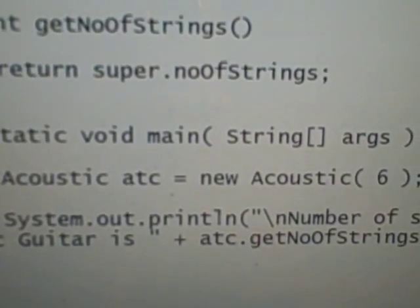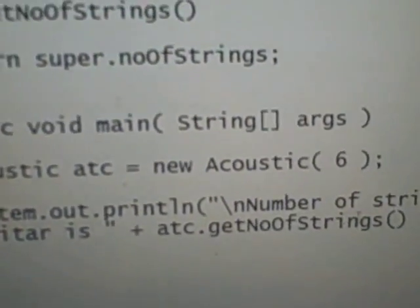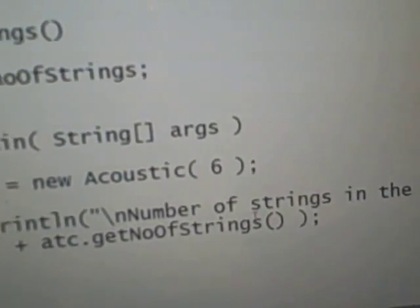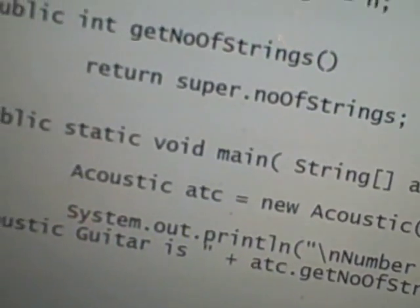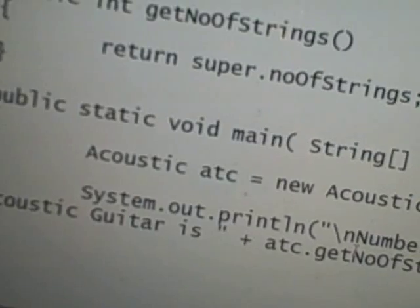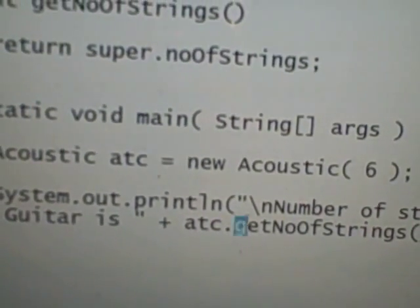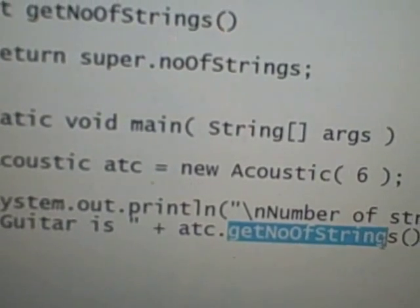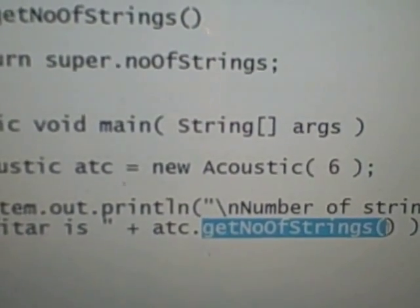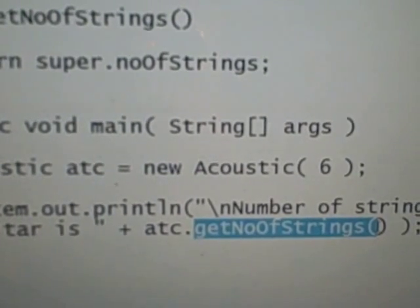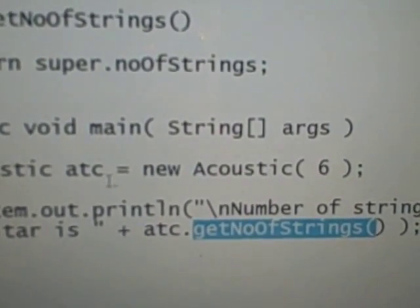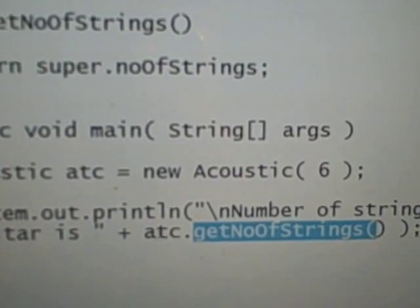Then we're going to display this: number of strings in the acoustic guitar is, then we're going to call get number of strings method that we just defined from our object ATC.